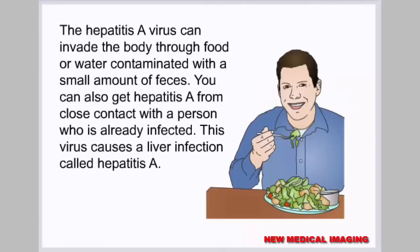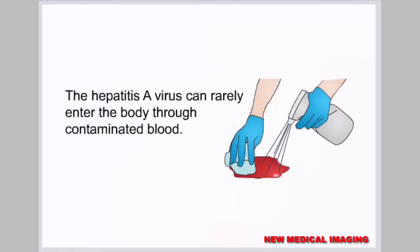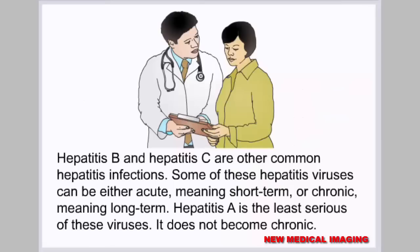The hepatitis A virus can invade the body through food or water contaminated with a small amount of feces. You can also get hepatitis A from close contact with a person who is already infected. This virus causes a liver infection called hepatitis A. The hepatitis A virus can rarely enter the body through contaminated blood. Hepatitis B and hepatitis C are other common hepatitis infections.